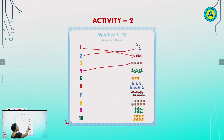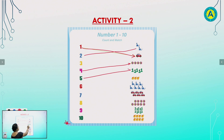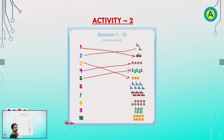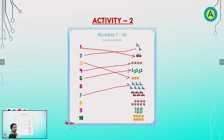Now, children, count the pictures. 1, 2, 3, 4, 5. Where is 5? Yes. This is the number 5. Next, children, count the pictures. 1, 2, 3. Where is 3? Yes. This is the number 3. Now, children, count the pictures. 1, 2, 3, 4, 5, 6, 7. Where is 7? Yes. Match the pictures with the number 7. Now count the pictures. 1, 2, 3, 4, 5, 6. Where is 6? Yes. This is the number 6.